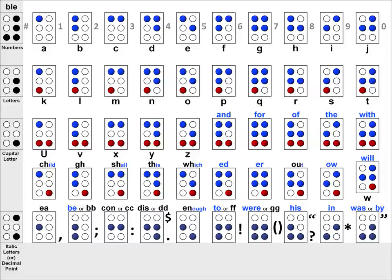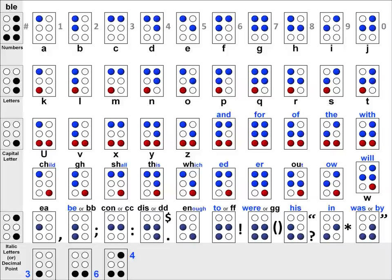So, our first number was 364. So, we add dot 3, and then to that we add dot 6, and then to that we add dot 4. So, the first cell has one dot raised, the second cell has two dots raised, and the third cell has three dots raised.